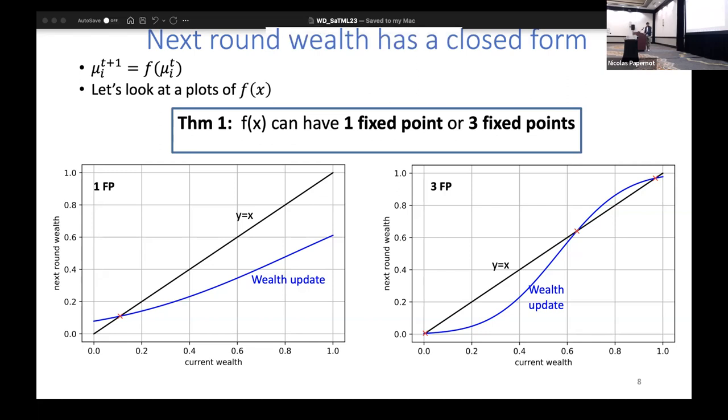On the x-axis I've plotted the current wealth, on the y-axis you have the next round's wealth. In blue you have the wealth update function f(x), and in black is y equals x. What I mean by one fixed point or three fixed points is actually intersections with this y equals x line. The red crosses show you where they intersect. But what does one fixed point or three fixed points imply for wealth dynamics?